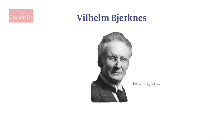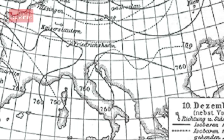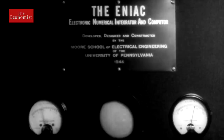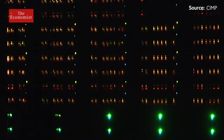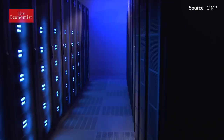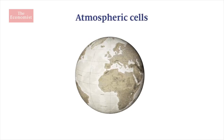This is Viran Bjarkness. At the end of the 19th century, he devised formulas which linked the flow of heat, water and air. 50 years later, his ideas were the basis of the first computer model of the atmosphere. And modern-day weather forecasting was born. Today's climate models are the highly evolved descendants of that original, except the computers are some 25 trillion times faster. Here's how it works.